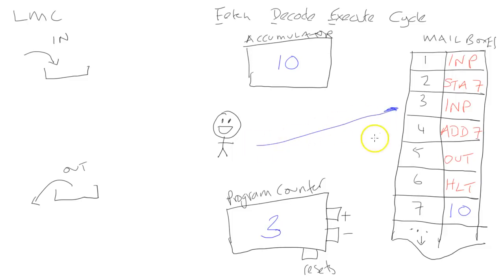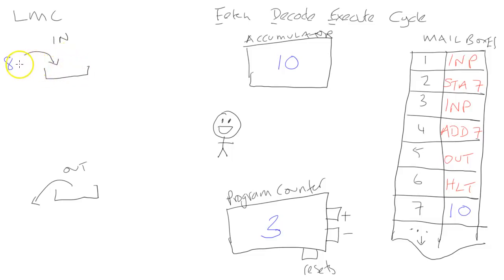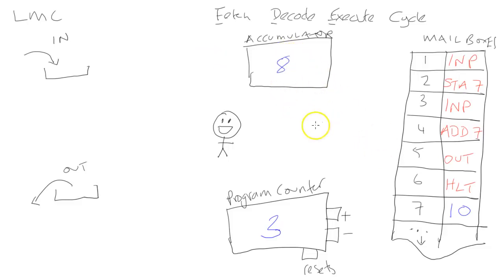He walks to position three, fetches the instruction which is 'input', decodes it as an input command, and executes it. He walks to the in-tray where there is another number waiting — number 8. He takes that 8 from the input tray to the accumulator, and whatever was previously in the accumulator is removed and replaced with the new number 8.